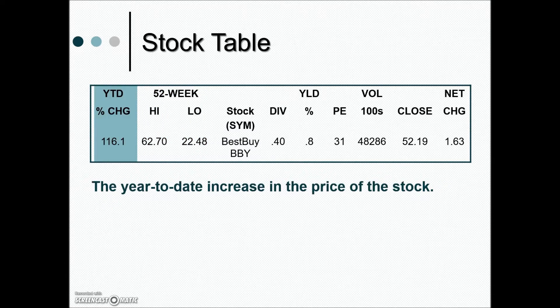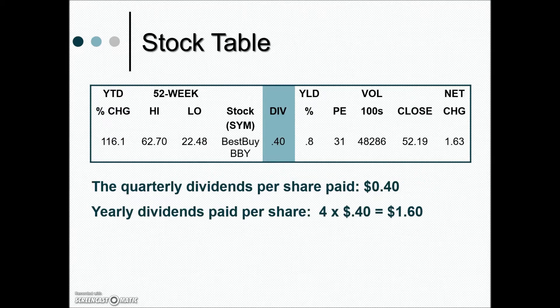This highlighted region of the stock table shows the year-to-date increase in the price of stock. We're looking at a 116% change — in this case an increase — over the lowest price it's been in the past year.